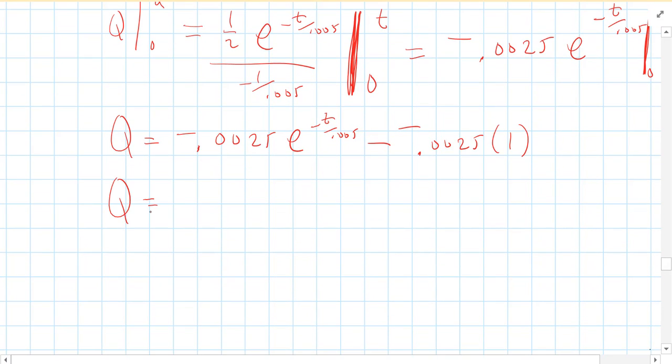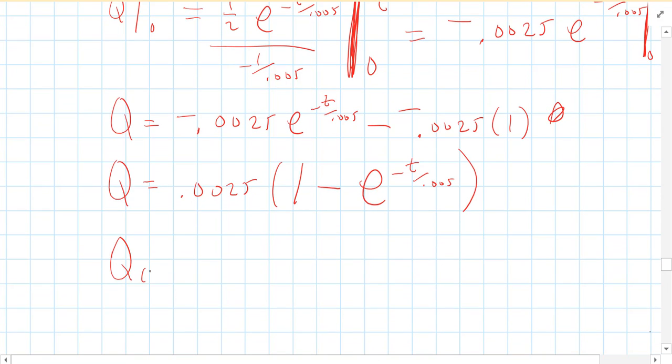So what I'm going to do is I'm going to factor out the 0.0025. And I'm going to put this term first because it's going to be positive because those two negatives will cancel. We get 1 minus E to the negative T over 0.005. And frankly, a better way to write this, Q as a function of time, would be if I move my decimal point over 3, it's 2.5 times 1 minus E to the negative T over 0.005 millicoulombs. So that's charge that flows through the inductor as a function of time.